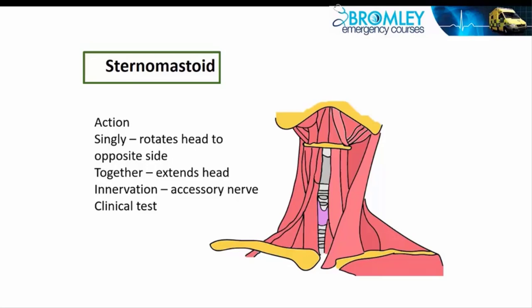Now, using this same picture, let's talk about the triangles of the neck. The college curriculum says we should be aware of the triangles, but we don't need to learn their borders and contents in detail. Behind the sternomastoid at its lowest limit, there's a triangle bounded by the sternomastoid in front and the trapezius at the back — that is the posterior triangle of the neck. At its base it has the scalene muscles, some lymph nodes, and the omohyoid muscle crosses it.